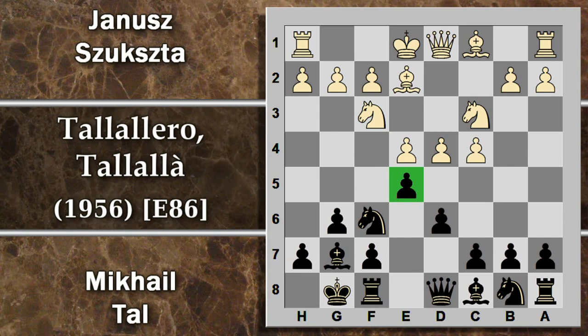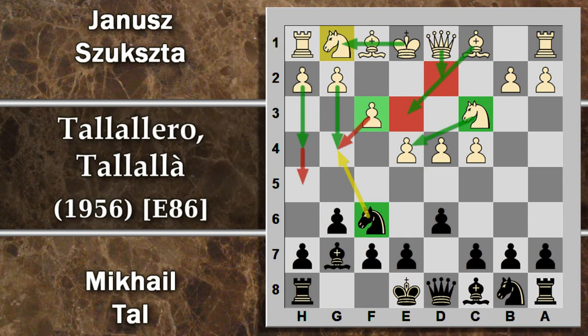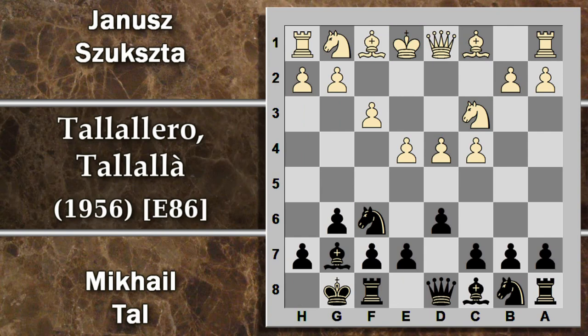Il nero prosegue tranquillamente a contrastare il centro del bianco. Alternativamente, per giocare ancora più aggressivo, c'è direttamente la spinta F4, preparandosi a cercare la spinta in E5 per sfondare al centro. Ad ogni modo dopo F3, il bianco probabilmente avrà più difficoltà a roccare corto perché questi pedoni saranno passibili di essere catturati o sfondati. Le altre opzioni prevedranno ad esempio la rocca lungo.